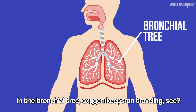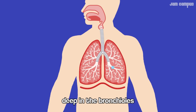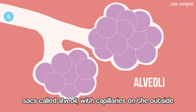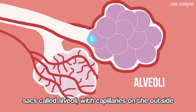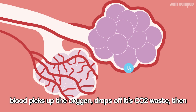Oxygen keeps on traveling. Deep in the bronchioles, to air cluster sacs called alveoli, with capillaries on the outside. Blood takes up the oxygen, drops off its CO2.